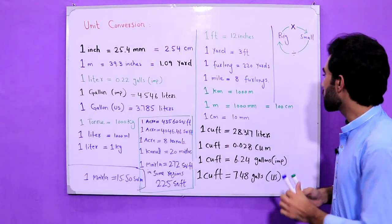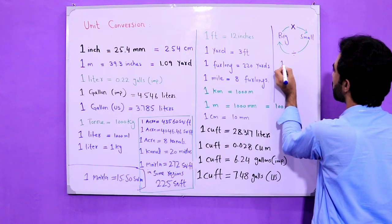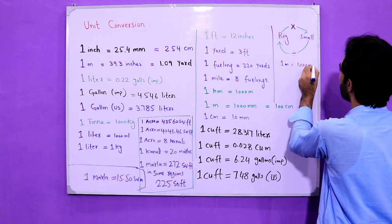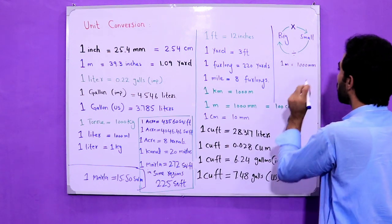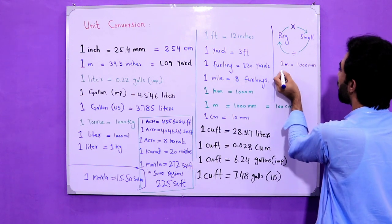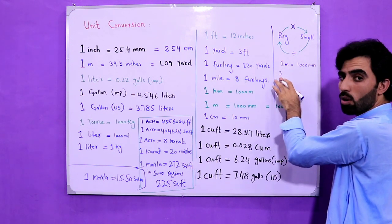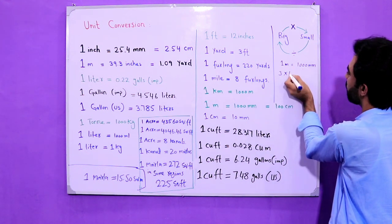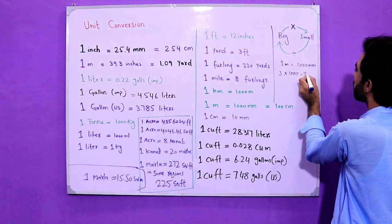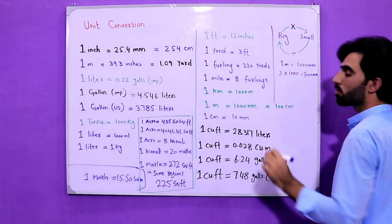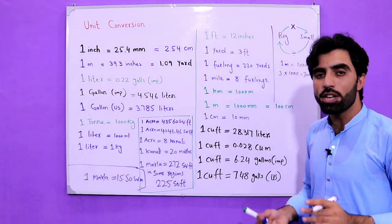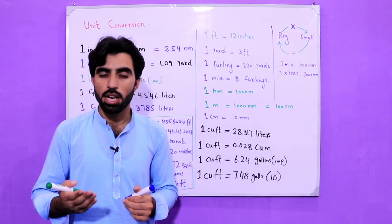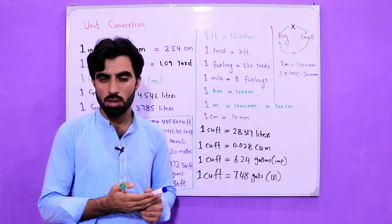For example, in one meter we have 1,000 millimeters. Now in three meters, we will multiply by 1,000. So we have 3,000 millimeters.